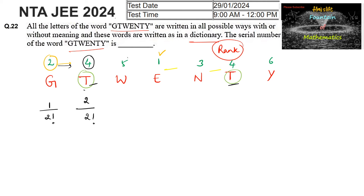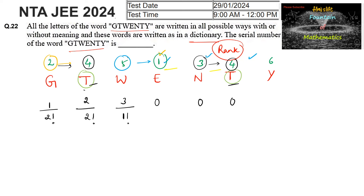Then the next letter is W at position 5. Less than 5, we have 1, 3, 4 — three numbers — so we write 3, divided by 1 factorial, because only one T remains to the right side; no other repeated letters. Coming to the next letters: below 1, below 3, below 4, and below 6, there are no numbers to the left side, so we write zero for each of those positions.